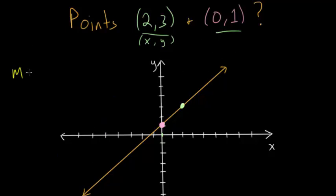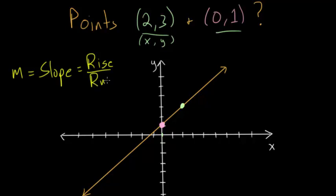Recall that slope, which we usually use the letter m to denote, is simply defined as how much does the line rise divided by how much it goes left or right, which we call the run. So slope is always this ratio — this fraction — of how much the function goes up or down divided by how much the function goes left or right. Between these two points, we're looking at how much did the function go up from one point to the next, and how much did it go over.